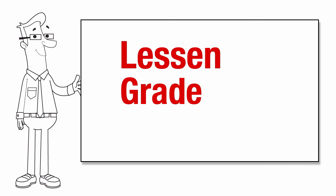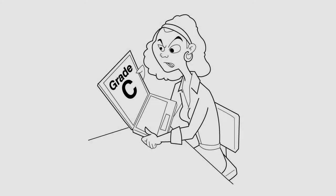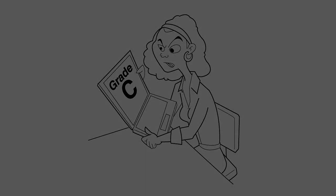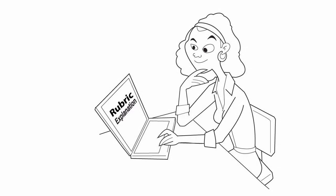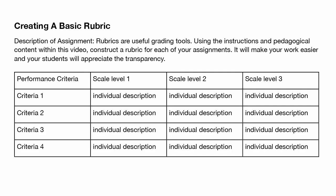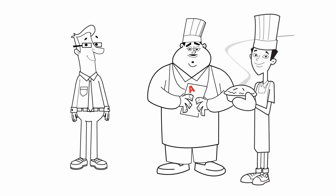Rubrics lessen grade frustrations. Sometimes students will contend that a grade is unfair and want specific reasons why they received the grade they did. Since the performance levels are clearly defined, students can review how their grade was determined. Using a rubric will make your work faster by making your grading more objective. It will help you add structure to your course, and best of all, students will appreciate the transparency.